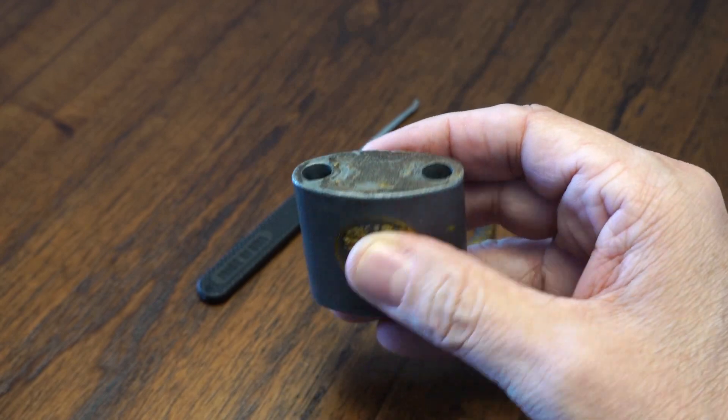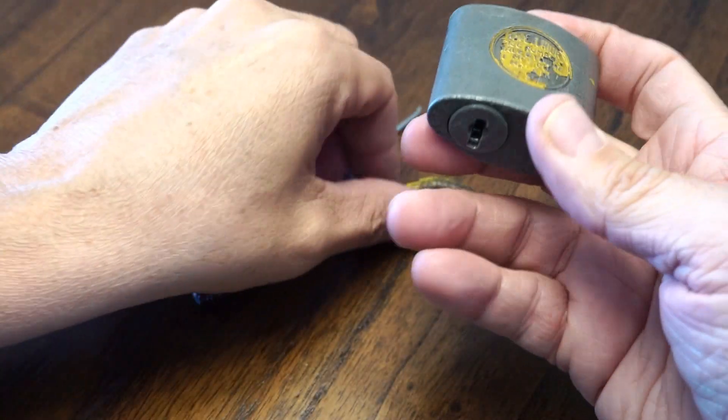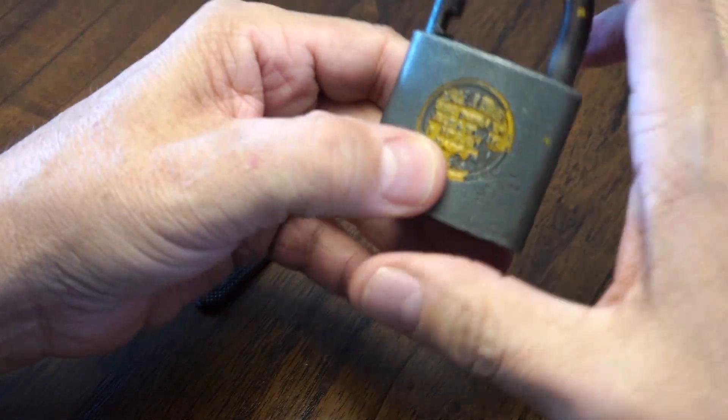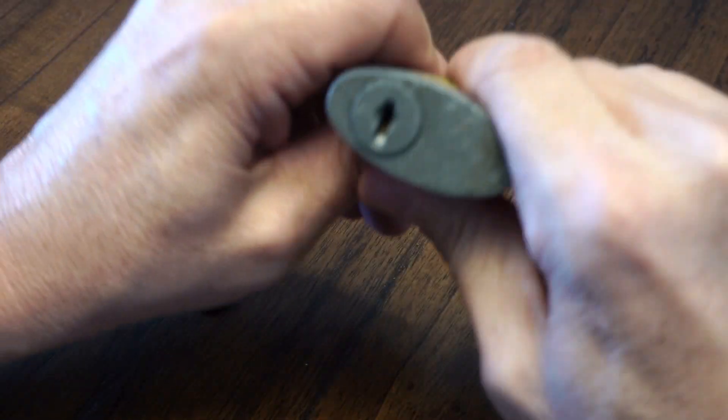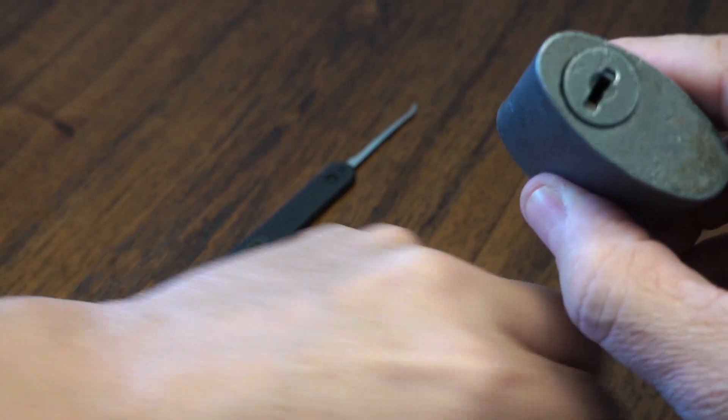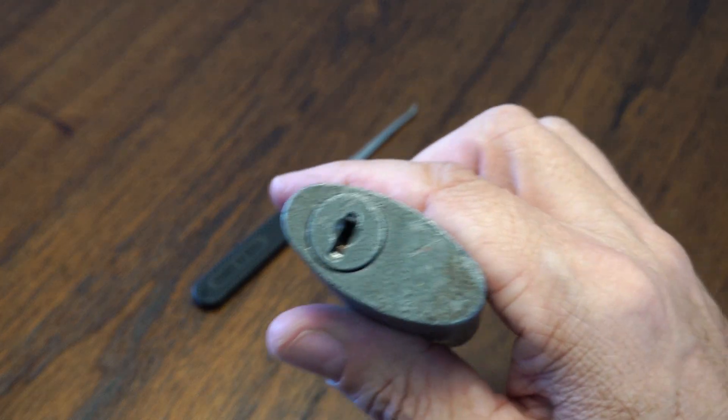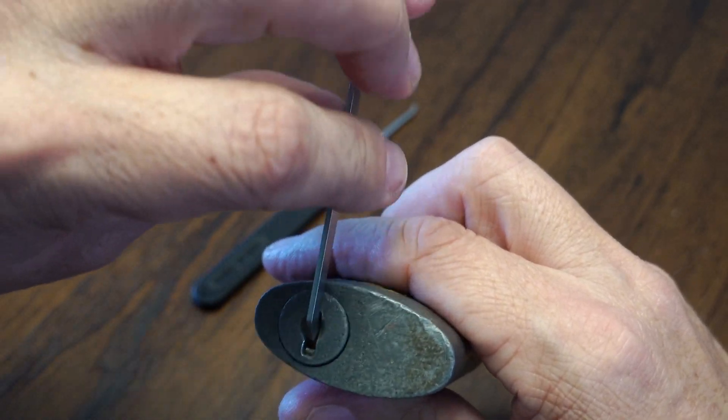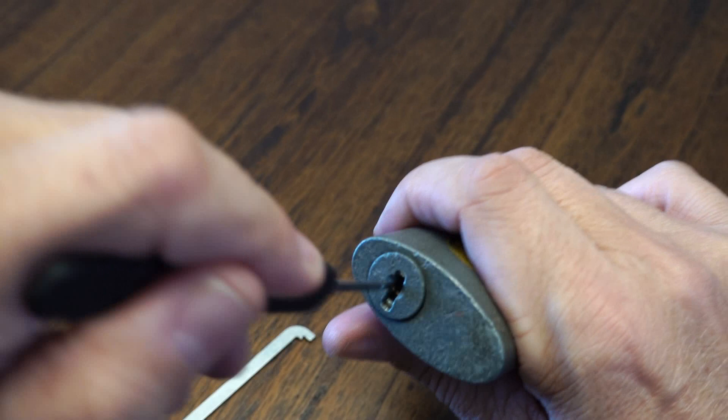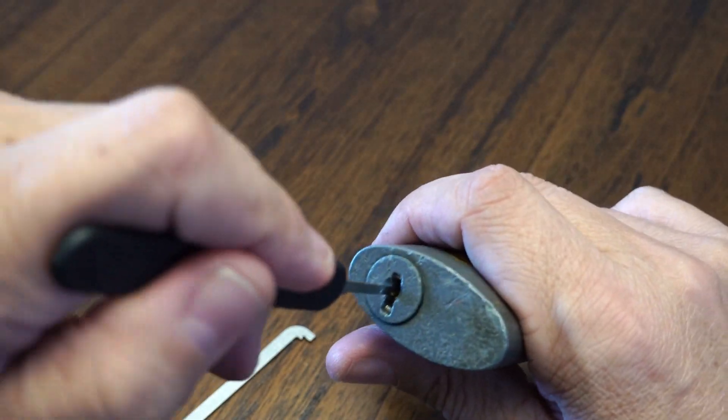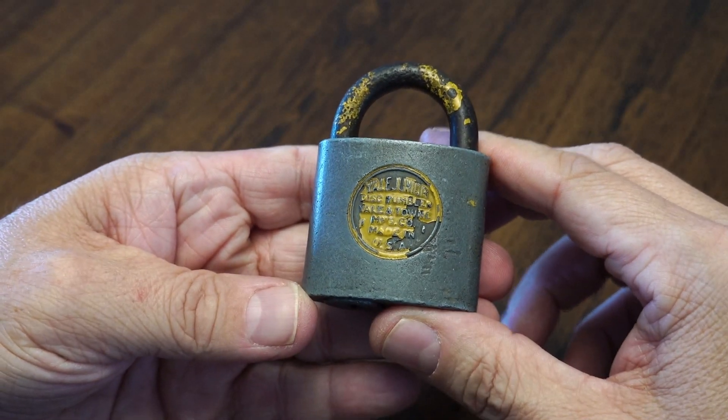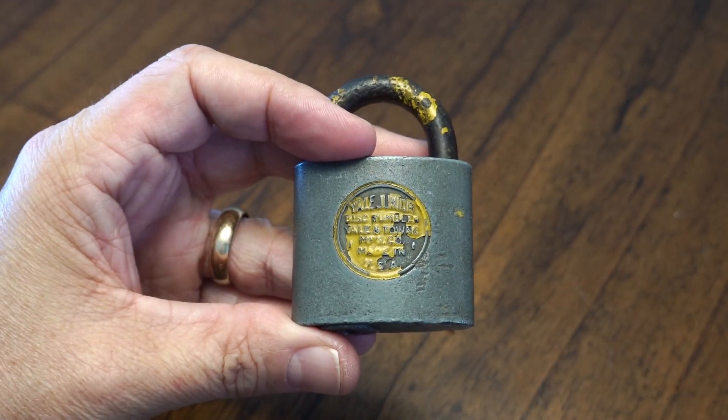The keyway being so wide like this, I don't really know how to tension it without having the wrench all sideways. But yeah, it's interesting, you know. It's a Yale wafer lock, and it was sort of a quick pick. So there you have it.